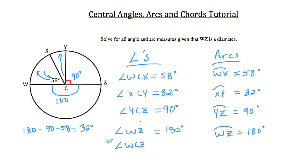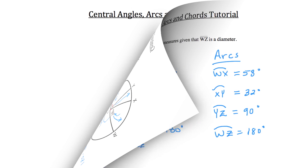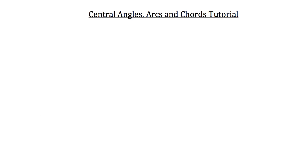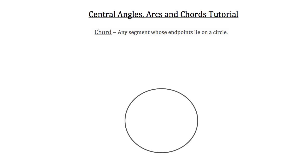Now let's move on to chords. A chord is any segment whose endpoints lie on a circle. So in this case, AB is a chord, because this segment has its endpoints A and B lying on this circle.